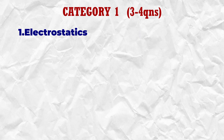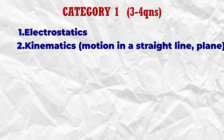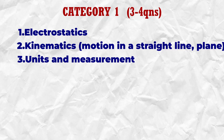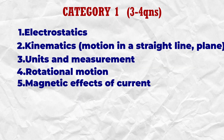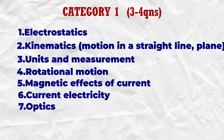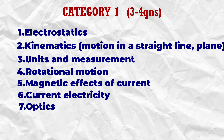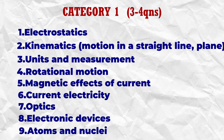There are three categories of chapter-wise weightage. The first category has three to four questions expected. These chapters include: Electrostatics, Kinematics, Units and Measurement, Rotational Motion, Magnetic Effects of Current, Current Electricity, Ray Optics and Wave Optics, Electronic Devices, Atoms and Nuclei, Semiconductor Electronics, and Communication Systems.